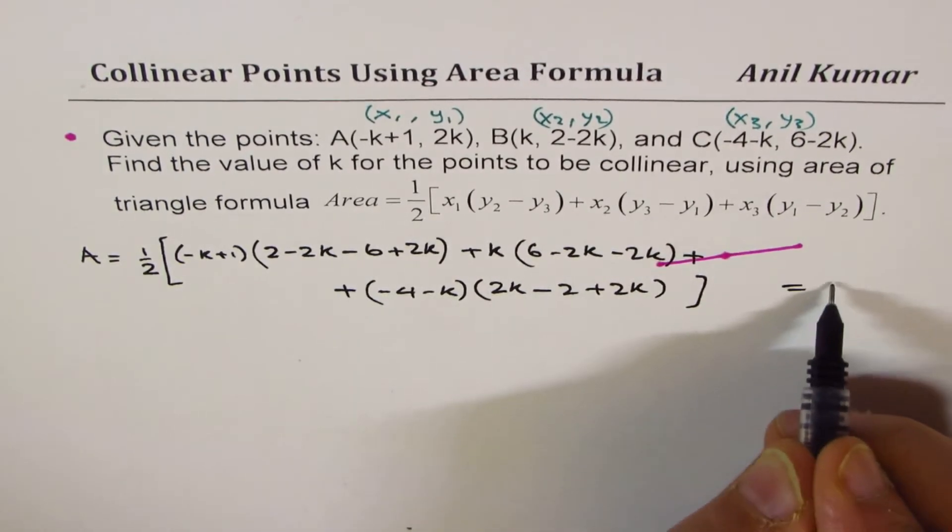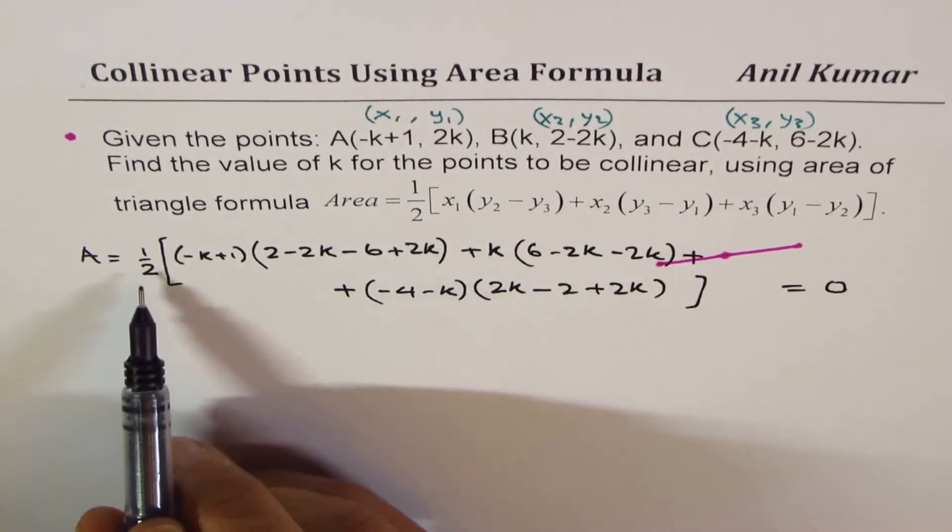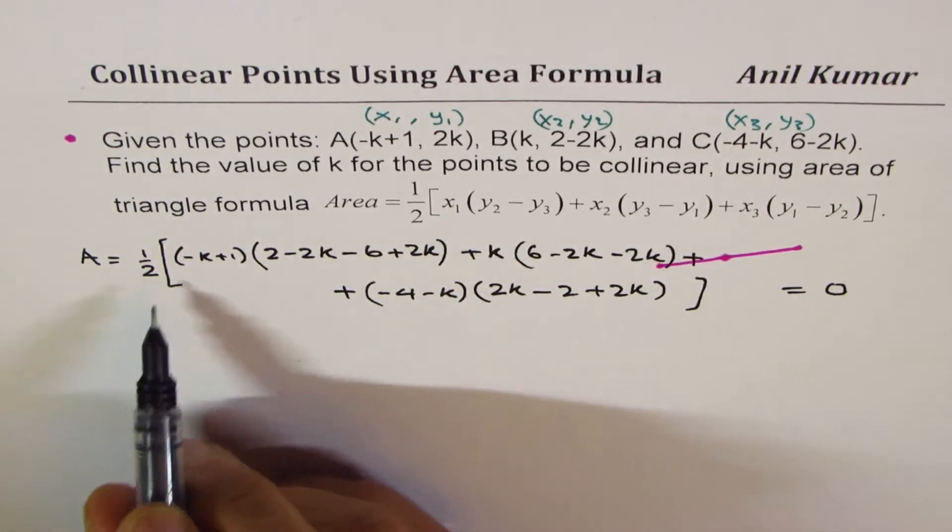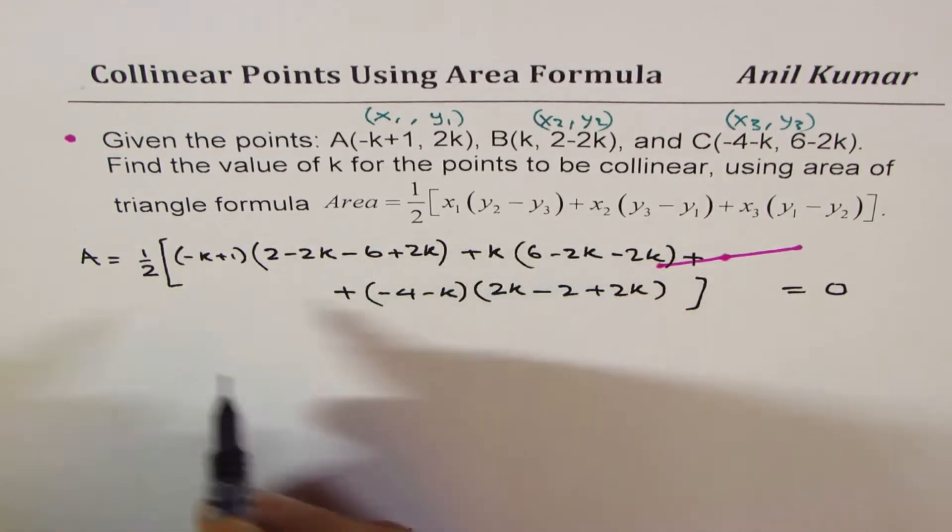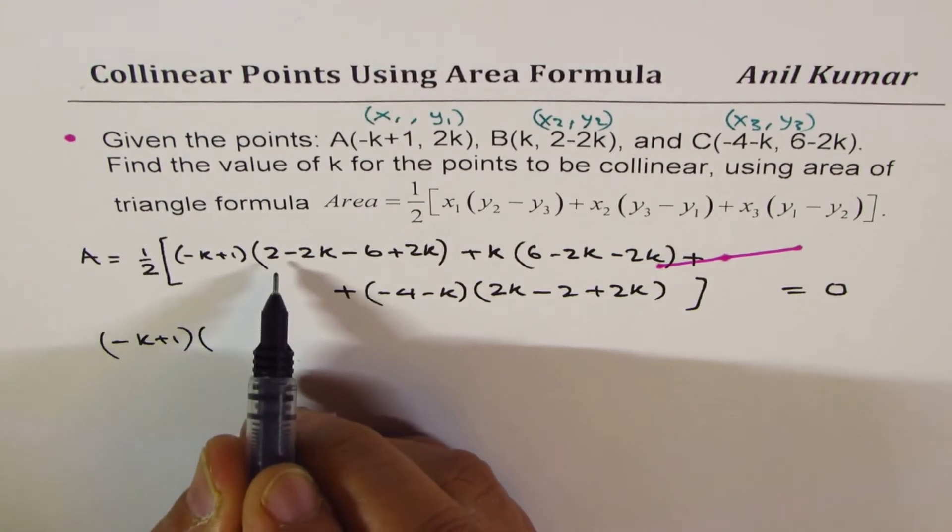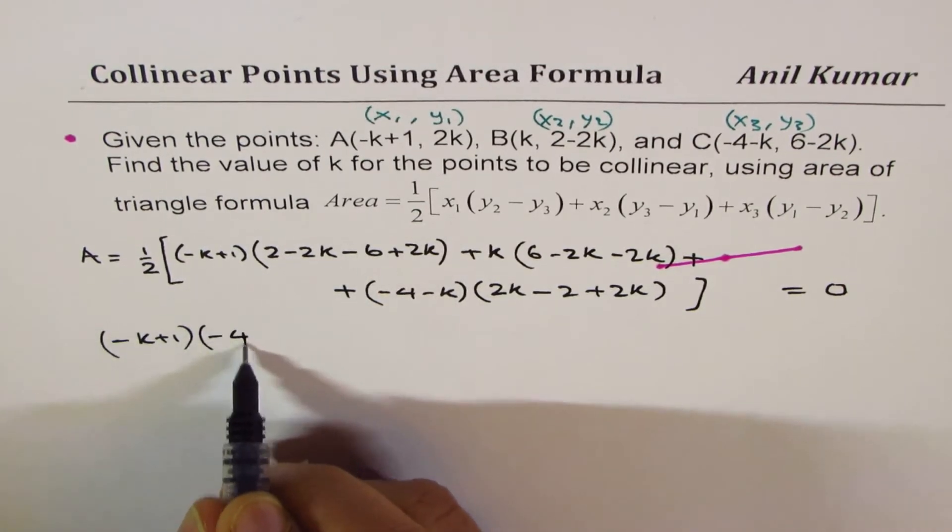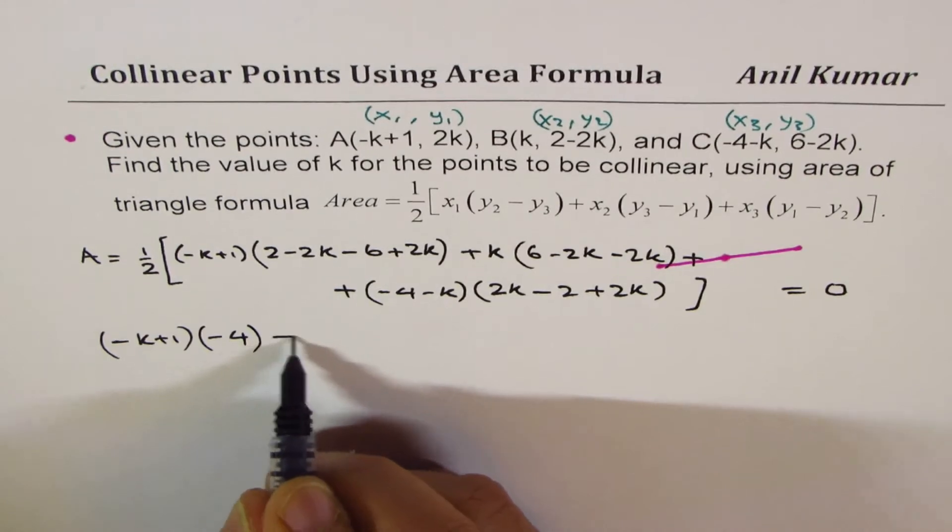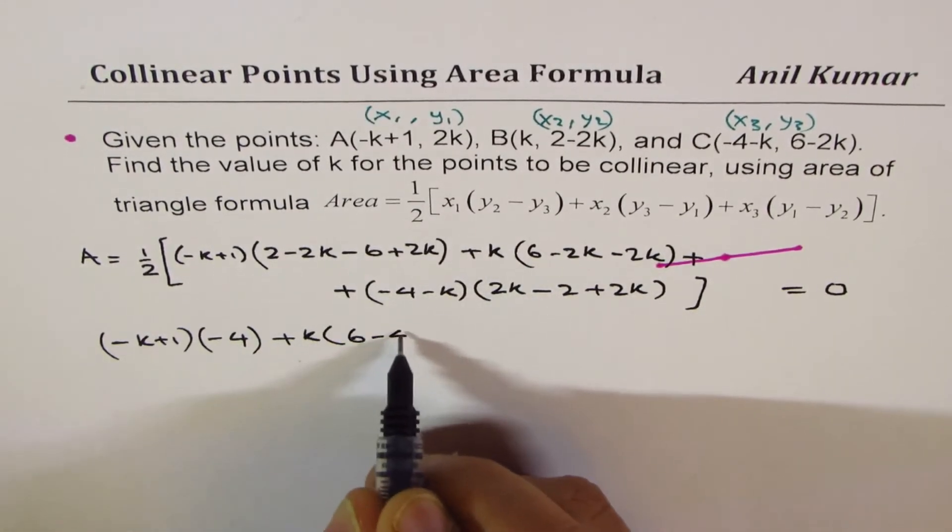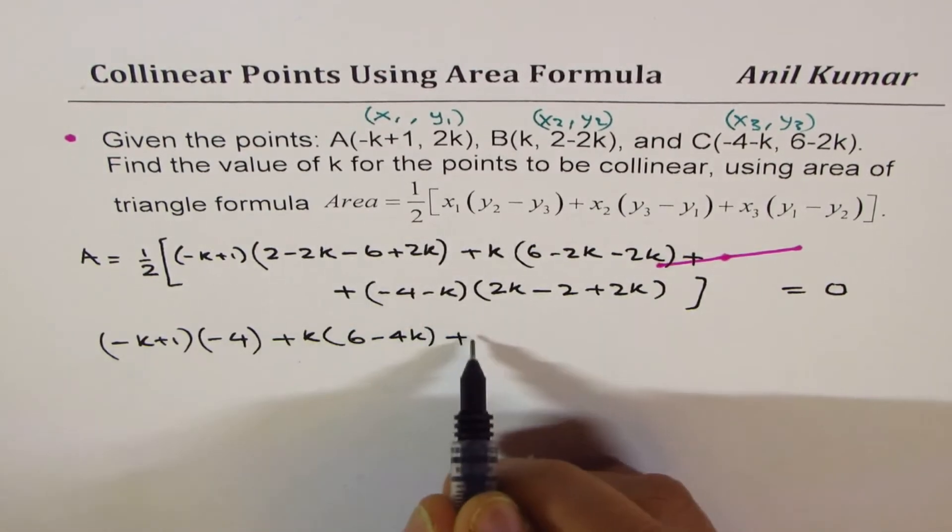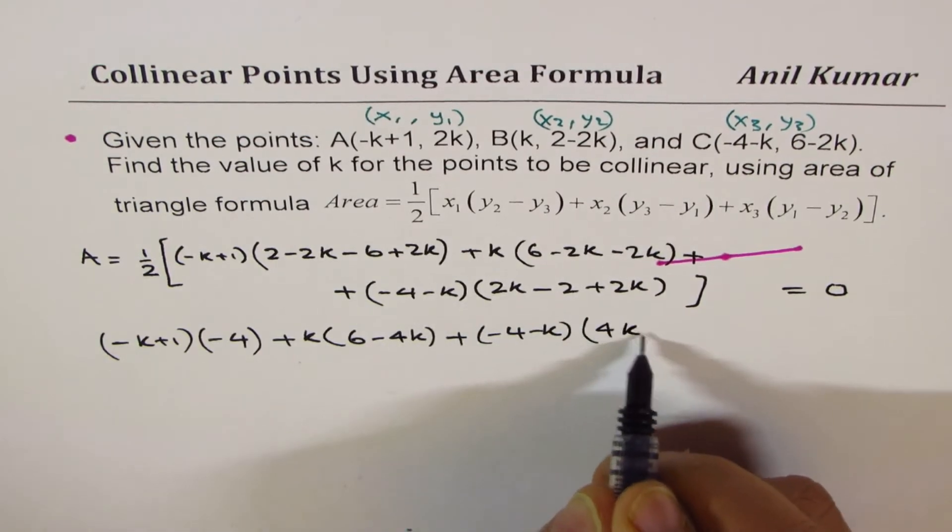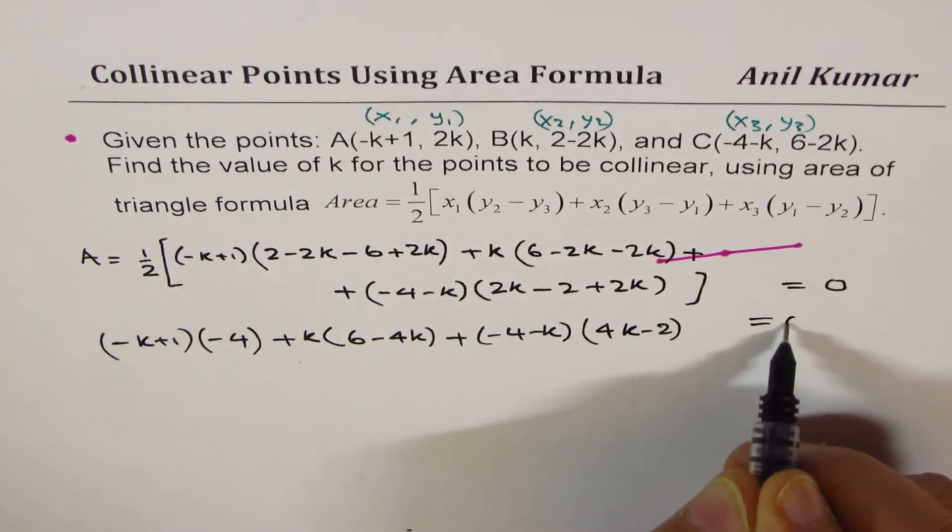So that becomes the area. Now this area should be equal to 0. So half we can multiply 2 by each side, so that gets over. We can simplify the inside terms now. So we get (-k+1) times 2 minus 6 is -4, -2k+2k is 0, plus k times 6-4k, plus here we have (-4-k) times 4k-2 equals to 0.